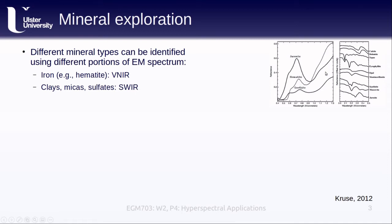For clays, micas, and sulfates, the short-wave infrared portion of the spectrum, between about 2,000 and 2,500 nanometers, is the most effective. The plot here shows a number of mineral signatures in the short-wave infrared, and you can see a number of different absorption features that make it possible to differentiate between them. Note that these signatures are offset in order to more easily compare them.